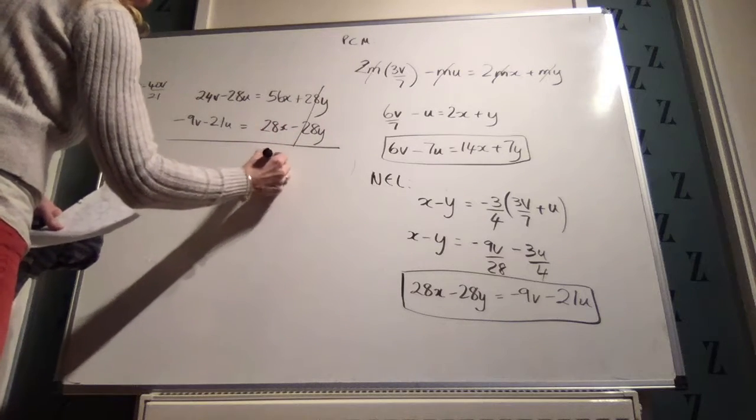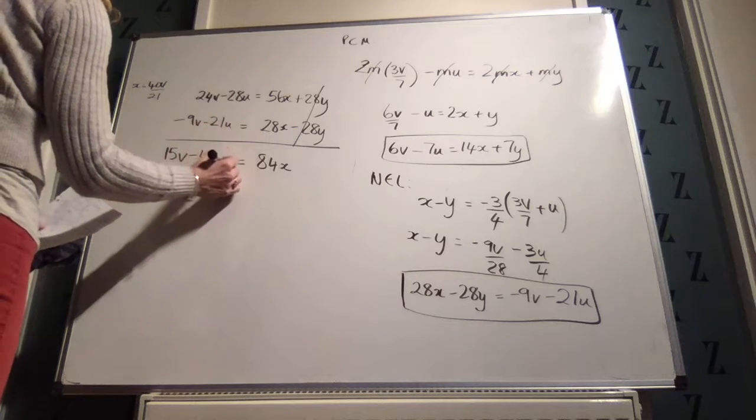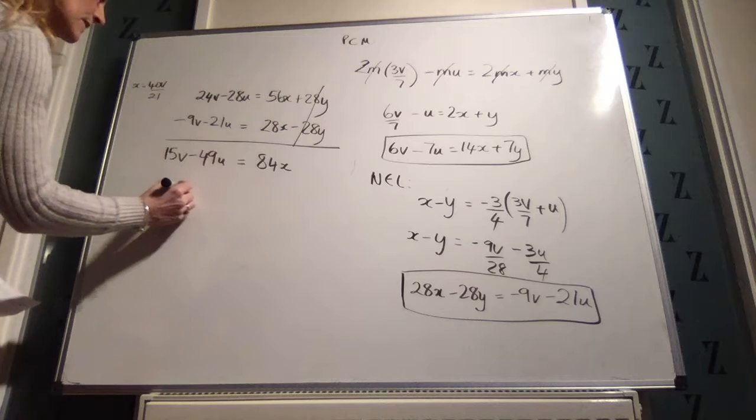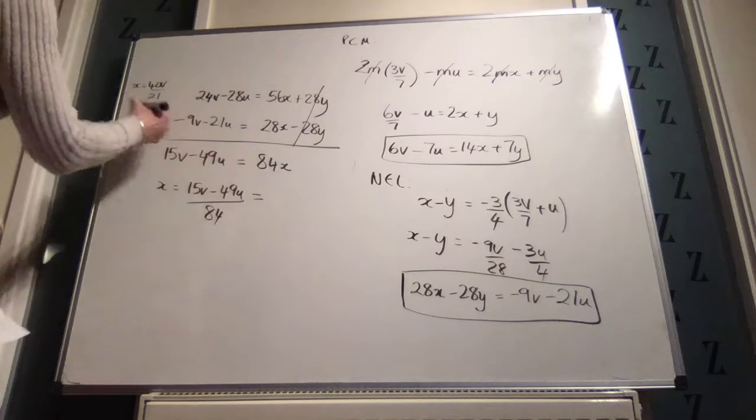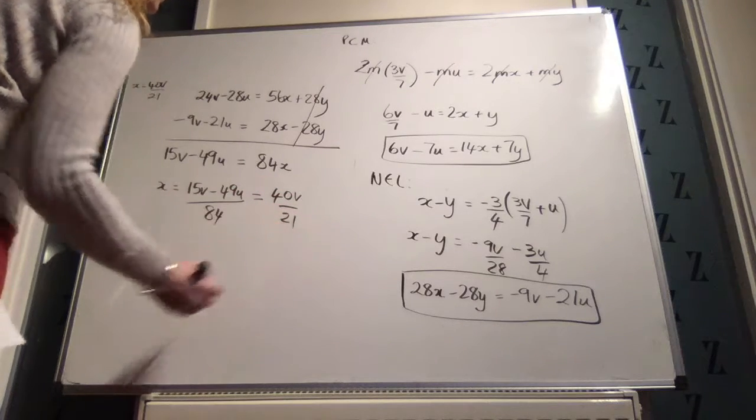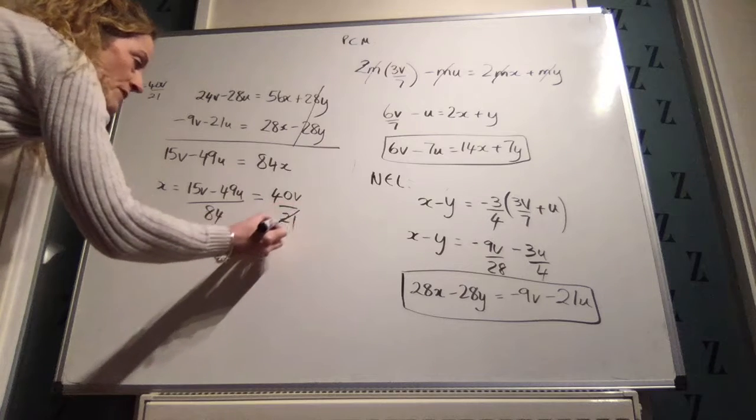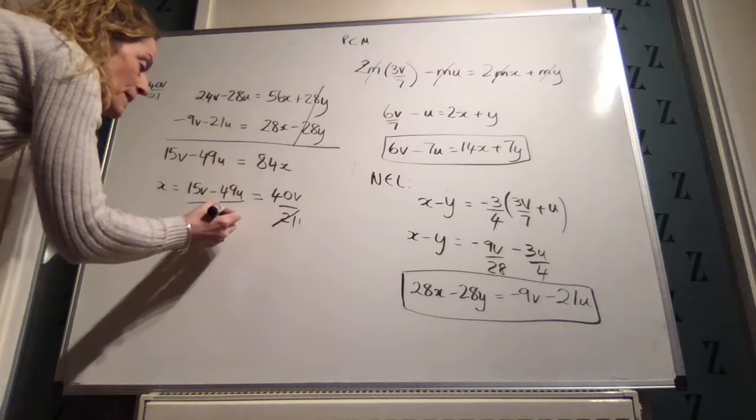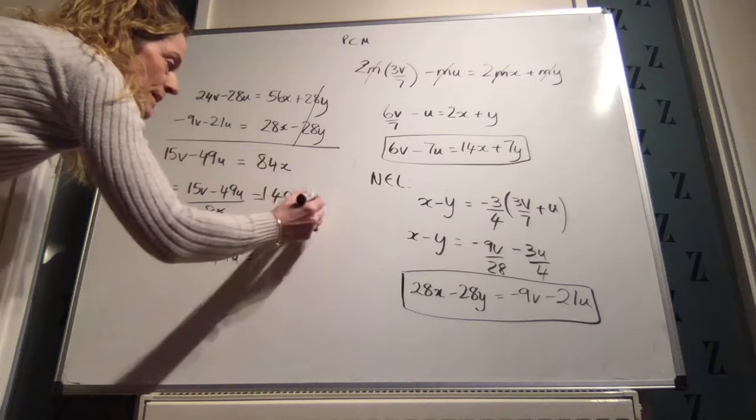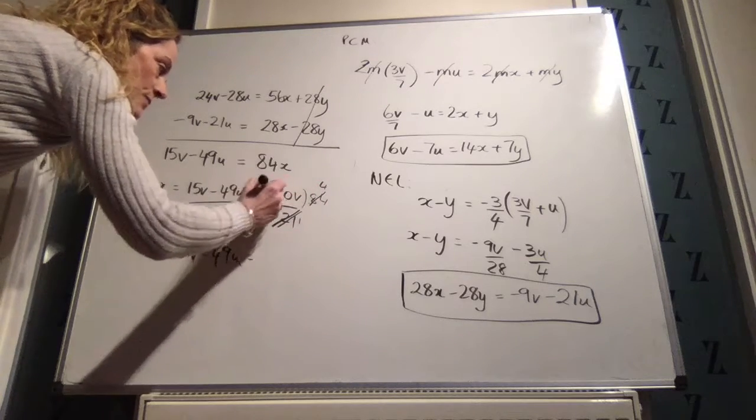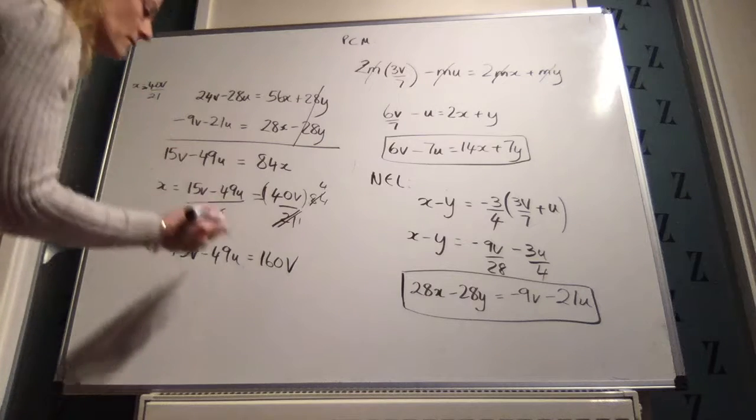24v minus 28u is equal to 56x plus 28y. 28x minus 28y is equal to minus 9v minus 21u. Now y's add to 0. We get 84x is equal to 15v minus 49u, which is equal to, from the first bit, minus 40v over 21. Now we could have just subbed that in at the start. I just wanted to not use as many fractions.